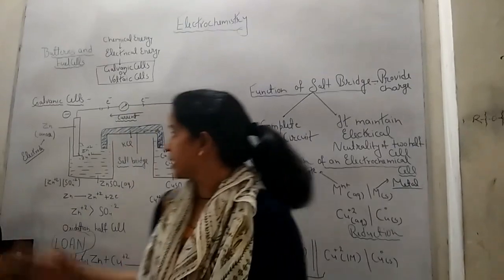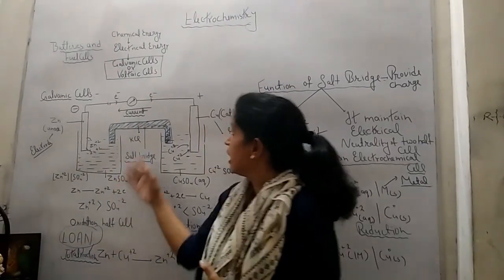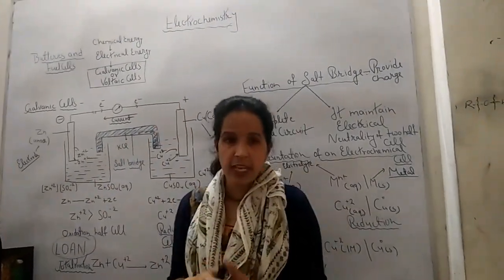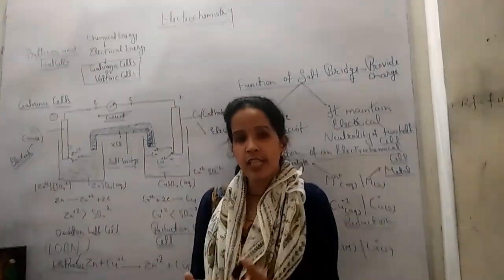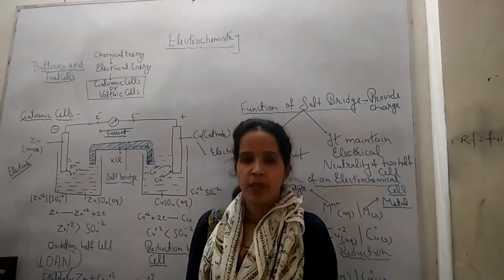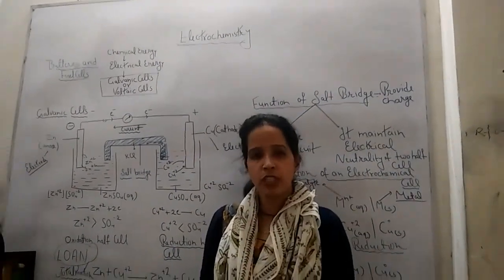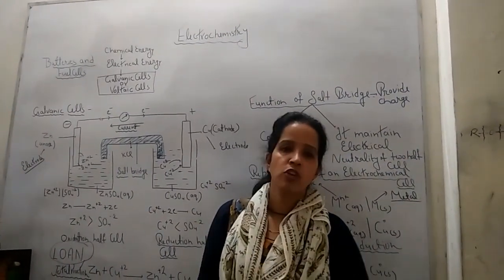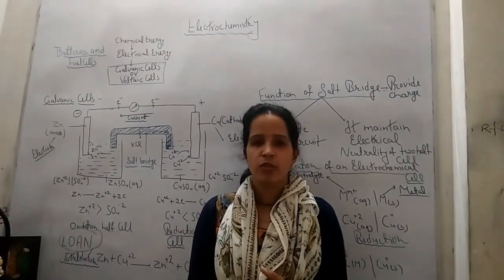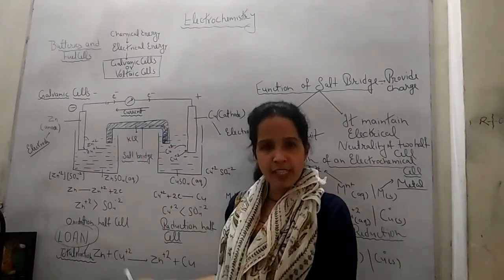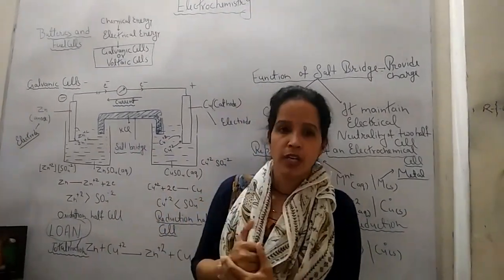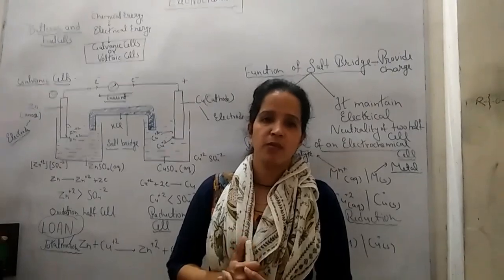We have studied the galvanic cell, also known as the voltaic cell. Daniel's cell is an example of a galvanic or voltaic cell. In my next video I will tell you about electrode potential. Thank you students — revise everything, it is very important for the exam.